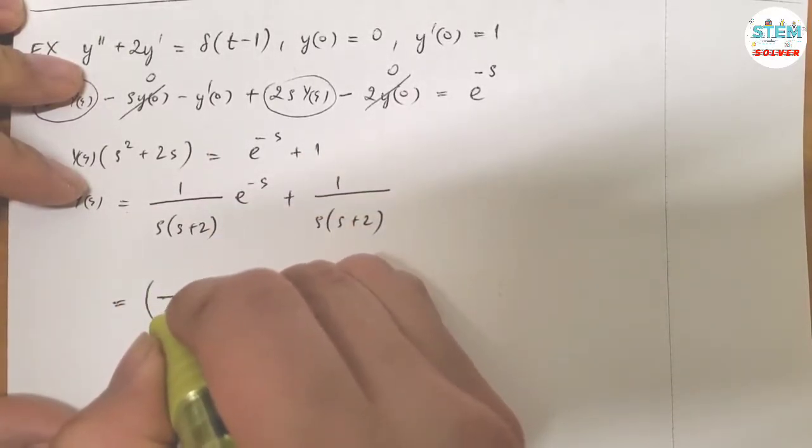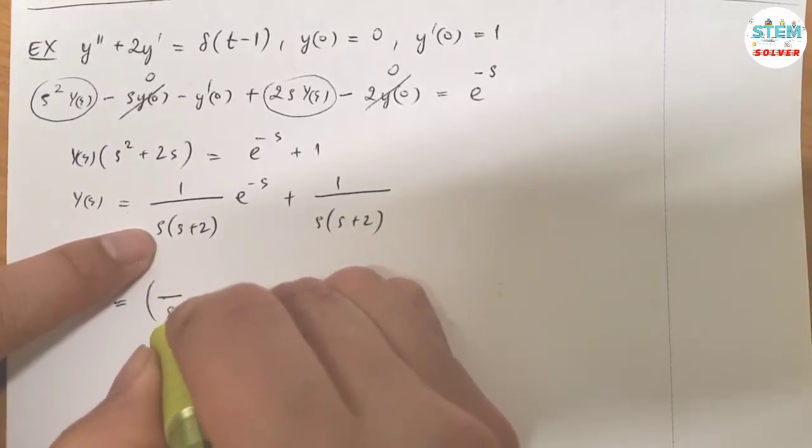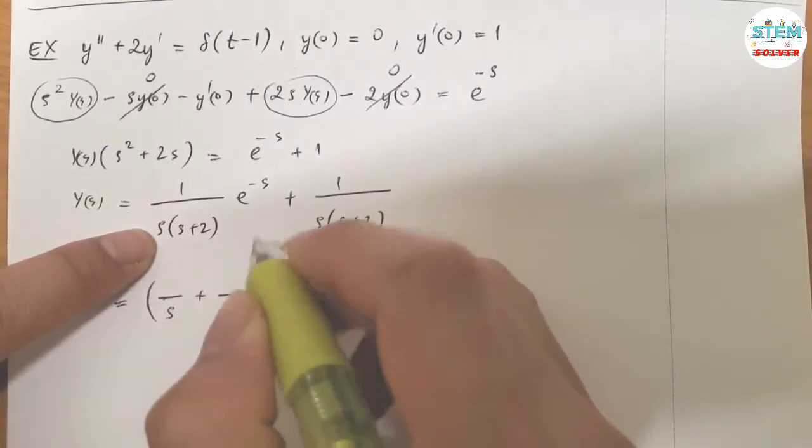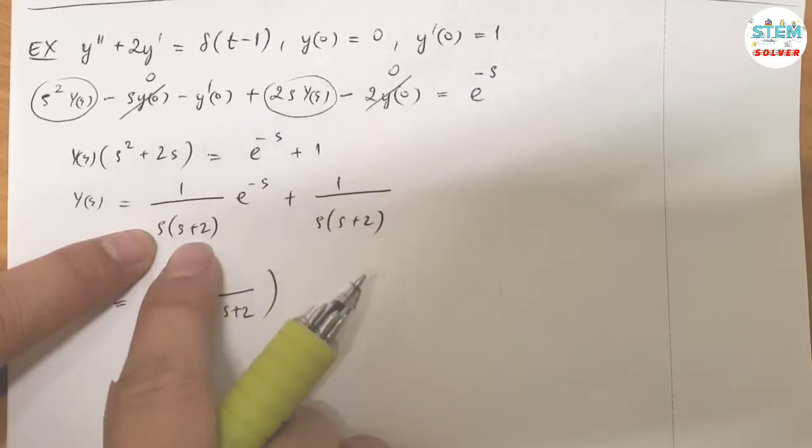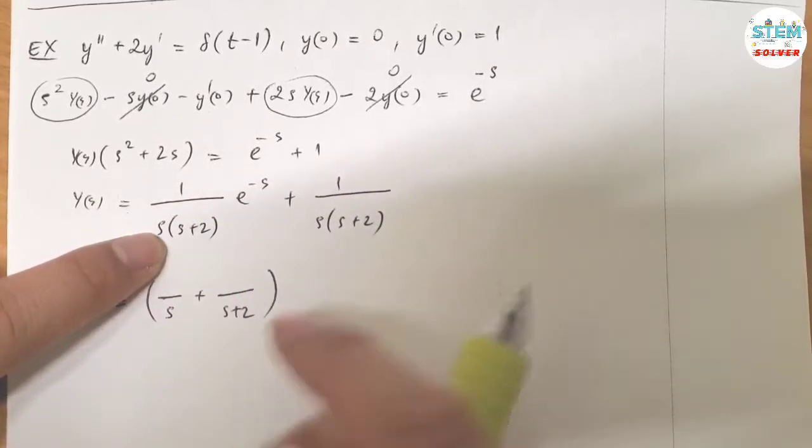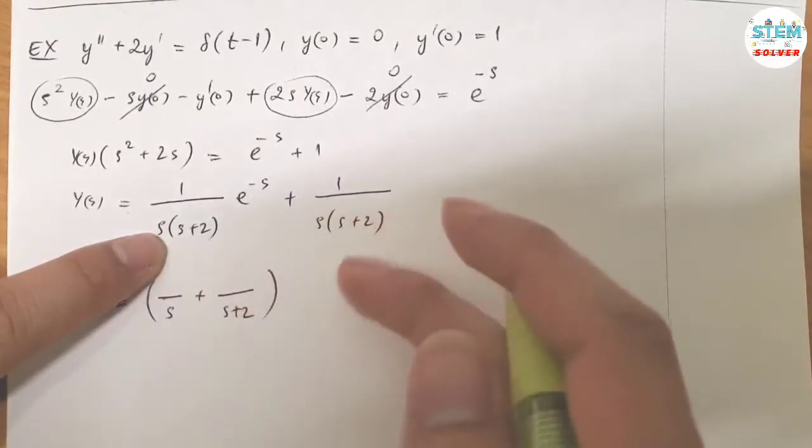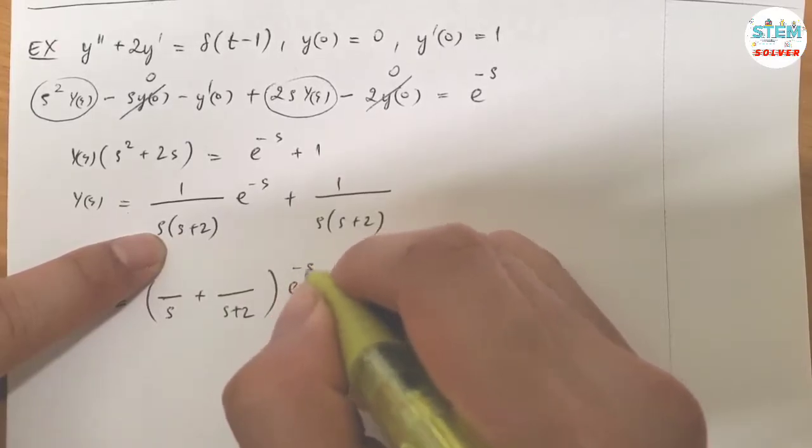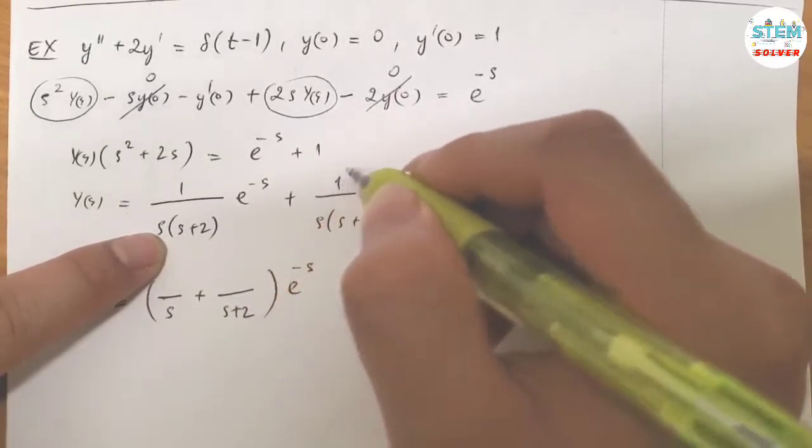So this can be written as something over S plus something over S plus 2. I'm gonna do it for this one first, and this one, you just bring it over because they look exactly the same. There's no difference between them.